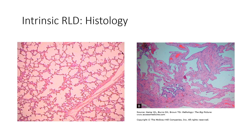Histologically, we see thickening of the alveolar septae. Compared to an obstructive defect where we saw thin, destroyed walls, here the septae are overly thick and destroyed. This is a normal alveolar plot compared to a diseased alveoli with thickened, fibrosed walls.